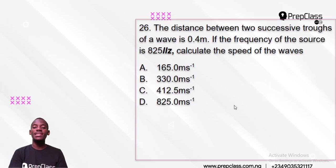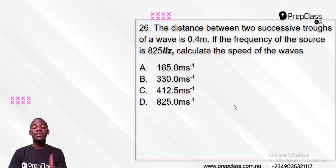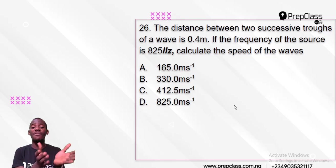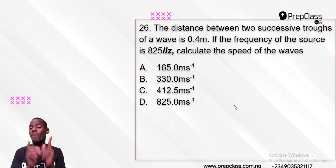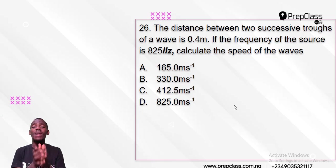Now let's get to number 26. The distance between two successive troughs on a wave is 0.4 metres. If the frequency of the source is 825 Hz, calculate the speed of the wave. Now this is just a relationship — an interface between frequency, wave speed, and wavelength. There's a formula that combines all of them. Do you have any idea what that formula is?